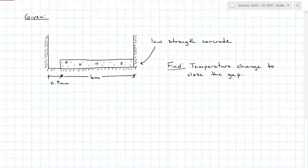In this example we have a completely not drawn to scale concrete slab that is 6 meters in length at rest. There is a 0.9 millimeter gap between the concrete and an immovable wall. Find the temperature change to close the gap.